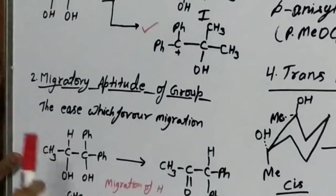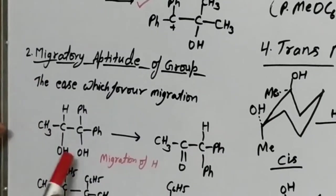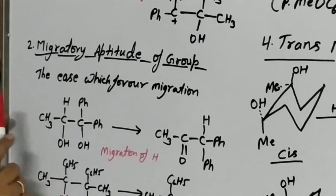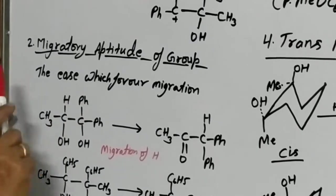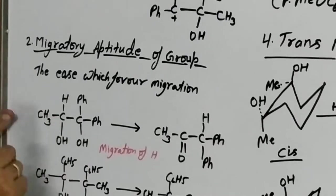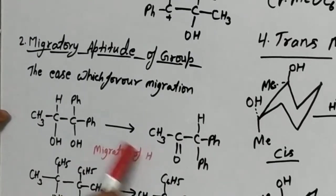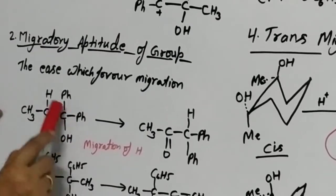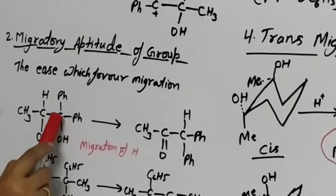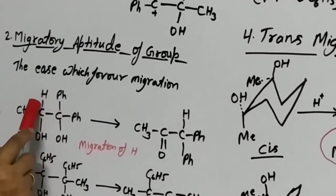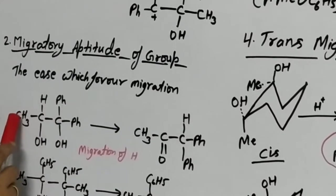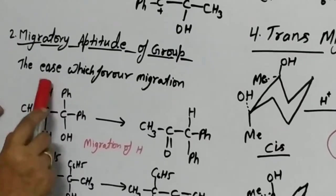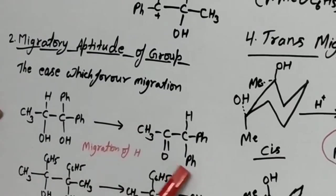For example, in this compound there is a comparison between 3 groups — hydrogen, methyl group, and phenyl group — as to which will migrate. In this case, hydrogen will migrate. First of all, OH will be removed from here, carbonium ion will produce, and hydrogen will migrate in place of methyl. So there is a competition between hydrogen and methyl group, and hydrogen will migrate and the product will be less.